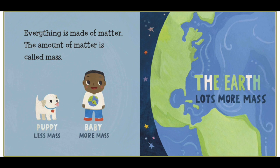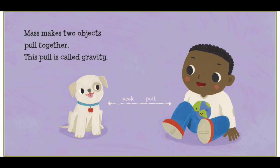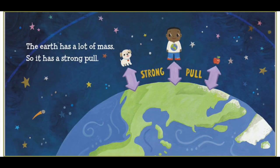The Earth: lots more mass. Mass means two objects pull together. This pull is called gravity. The Earth has a lot of mass...